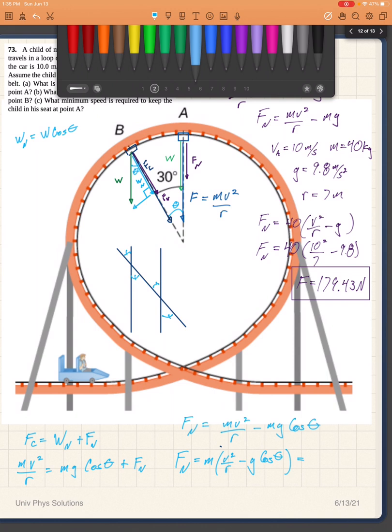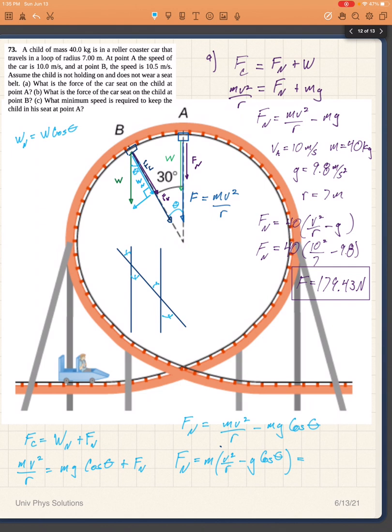So v squared in this situation for part B is 10.5. So 10.5 squared, that's 110.25 divided by r, which is 7, that's 15.75, minus g, which is 9.8 times the cosine of theta, which is the cosine of 30 degrees.